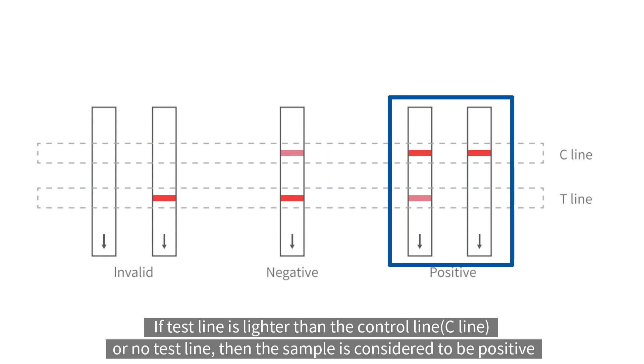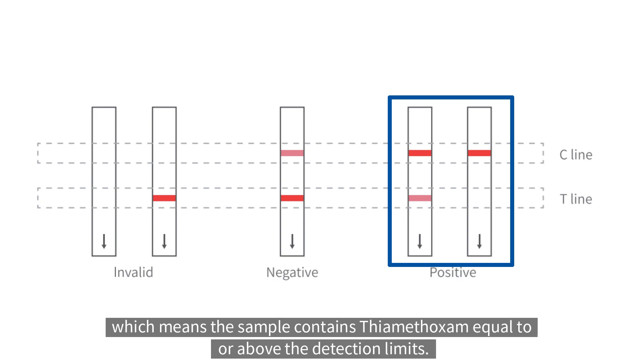If test line is lighter than the control line or no test line, then the sample is considered to be positive, which means the sample contains thiamethoxam equal to or above the detection limits.